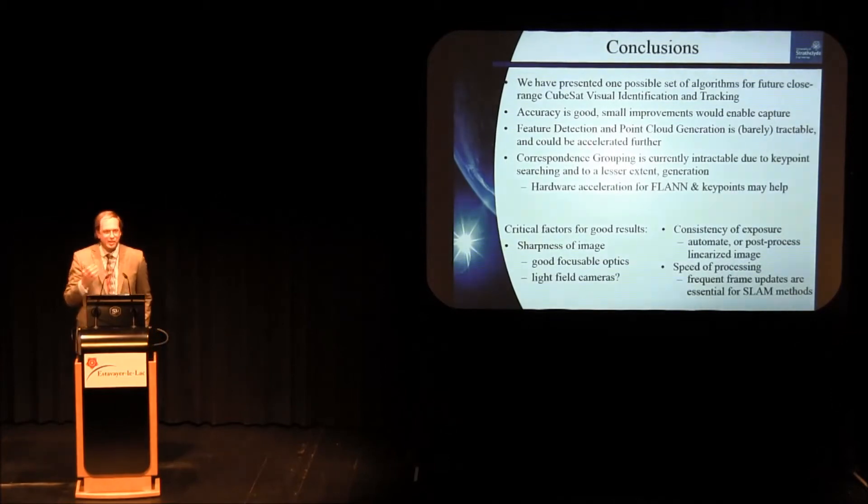In closing, this is not the only way to do vision for a CubeSat. This is just one way. We've certainly proven we can do visual identification and tracking. The accuracy is not too bad right now. It certainly could be improved if we want to be able to actually do capture with a robotic arm in the future. We could improve feature detection and point cloud generation by optimization. But the thing we really have to deal with right now is the matching and keypoint generation for correspondence grouping in 3D. And there's other vital factors. If you're doing this, you need to have good image, good optics, consistency of exposure in your cameras. Or you could linearize each of your images and post-process them so they're all having the same exposure. And speed of processing, which is my main point really, in this discussion.